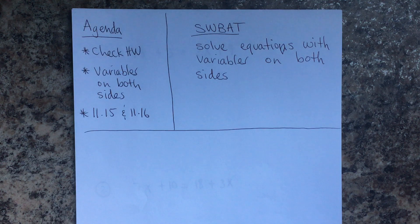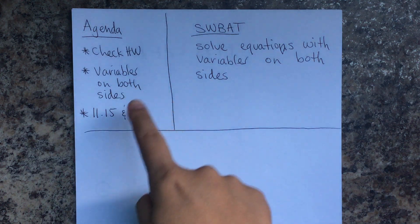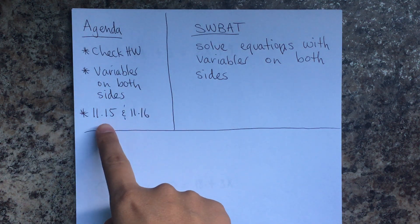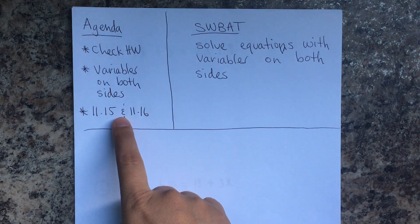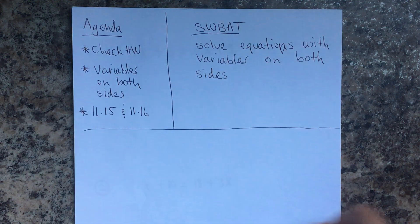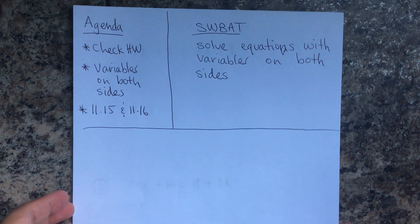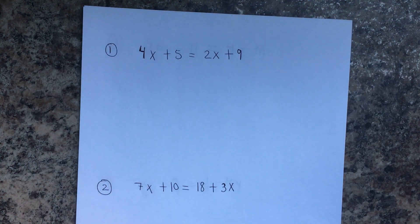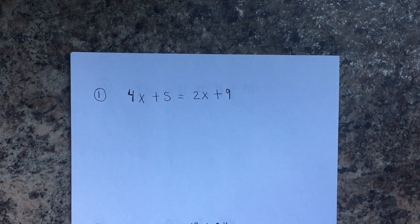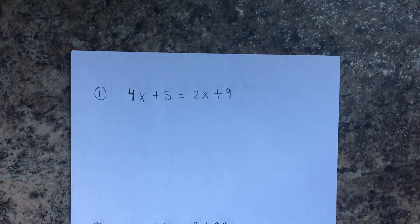Hello students, today's agenda is to check homework. We'll be doing variables on both sides. Students will be able to solve equations with variables on both sides — lessons 11.15 and 11.16. Remember, if you're not sure about previous material, you can always go to the other videos.